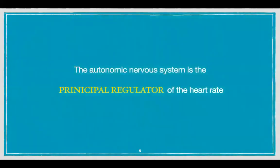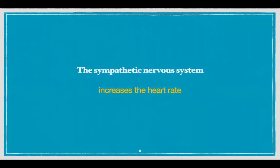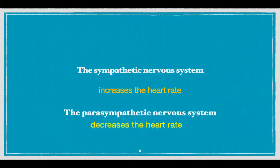Please remember that the autonomic nervous system is the principal regulator of heart rate. It plays a vital role in various visceral functions. As you all know, it has two divisions: sympathetic and the parasympathetic nervous system. The sympathetic nervous system increases the heart rate while the parasympathetic nervous system decreases the heart rate.